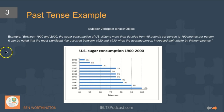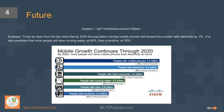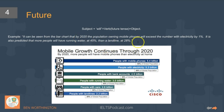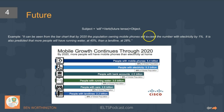Here's a quick example of the past tense, and here the future tense: 'It can be seen from the chart that by 2020' — this is a useful preposition — 'the population owning mobile phones will exceed, will surpass, will overtake the number with electricity by 1%.'